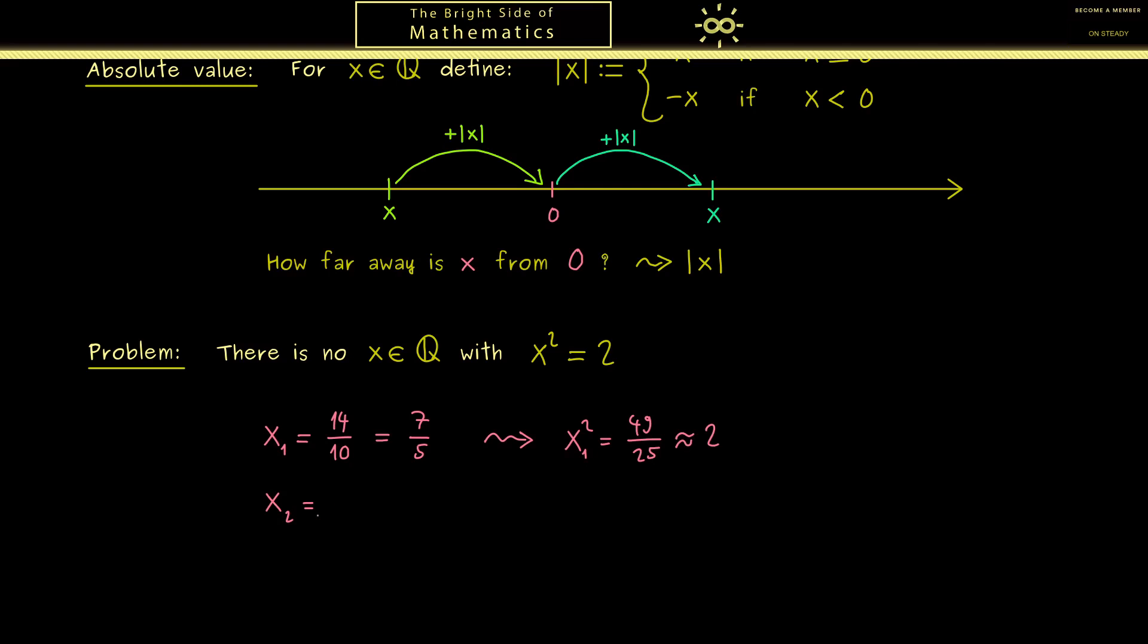However, it gets even better when we choose another fraction we call x₂. This is 141 over 100. So let's square this as well, but of course there we get large numbers in numerator and denominator. Nevertheless, the important part is that we are again close to 2. Then in the next step I want to increase the denominator again and then find a fraction x₃ such that the square is even closer to 2.